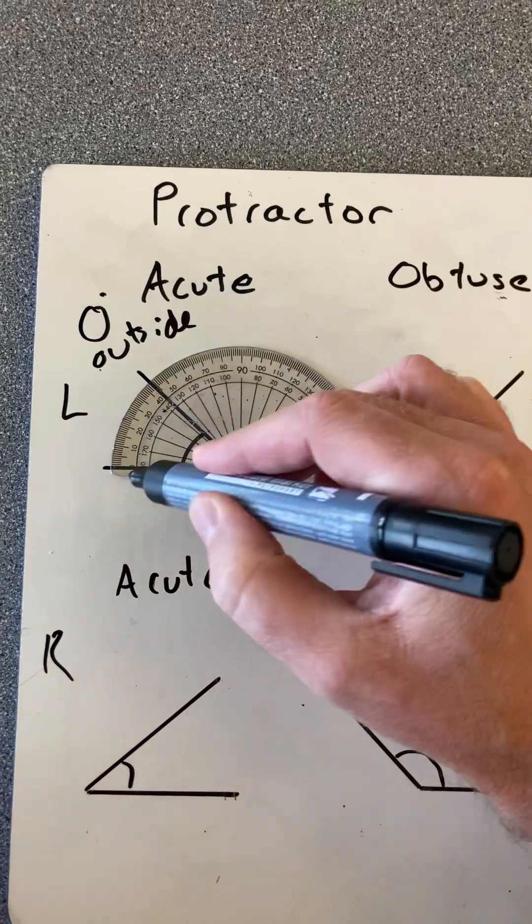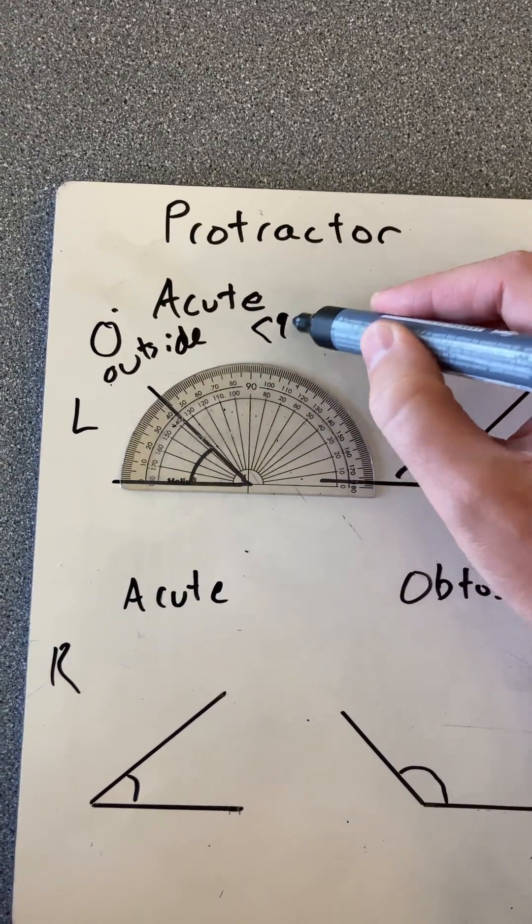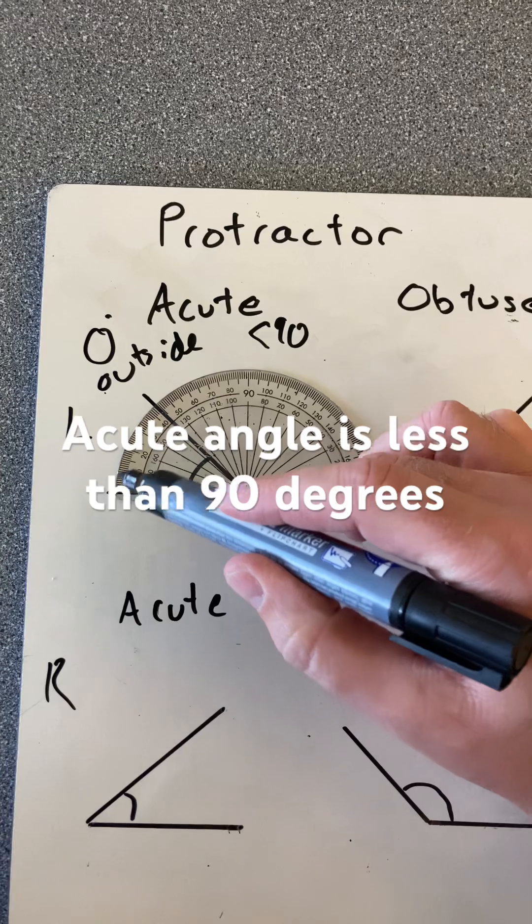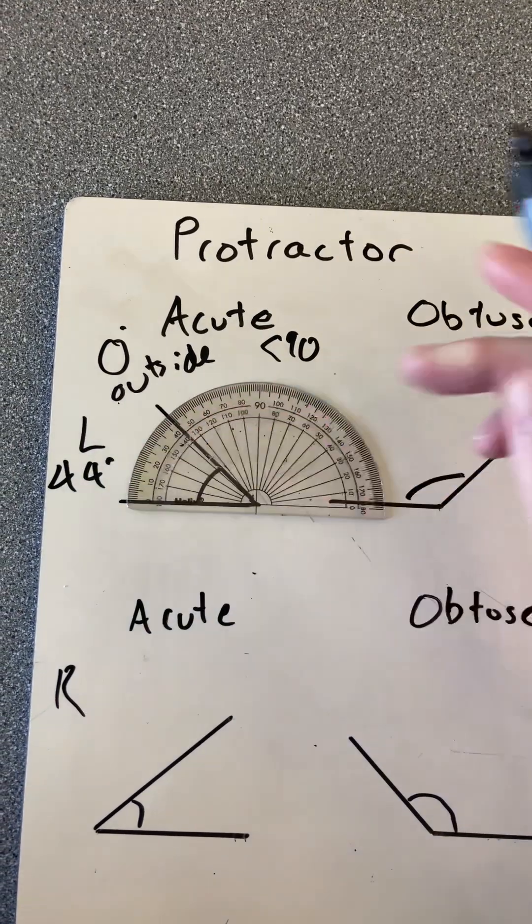We know it's acute because of that shape, and we know that that is less than 90 degrees, and I can read up from zero and see that it is about 44 degrees.